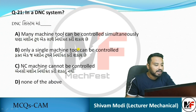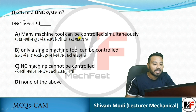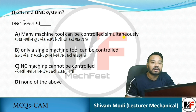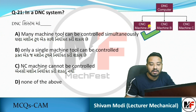Next MCQ: In a DNC system, how many machine tools can be controlled? Options: many machine tools simultaneously, only one machine tool, only NC machines, none of the above. The answer is A – many machine tools can be controlled simultaneously by just one computer. Here is the block diagram of the DNC system showing the main computer controlling many CNC machines simultaneously.